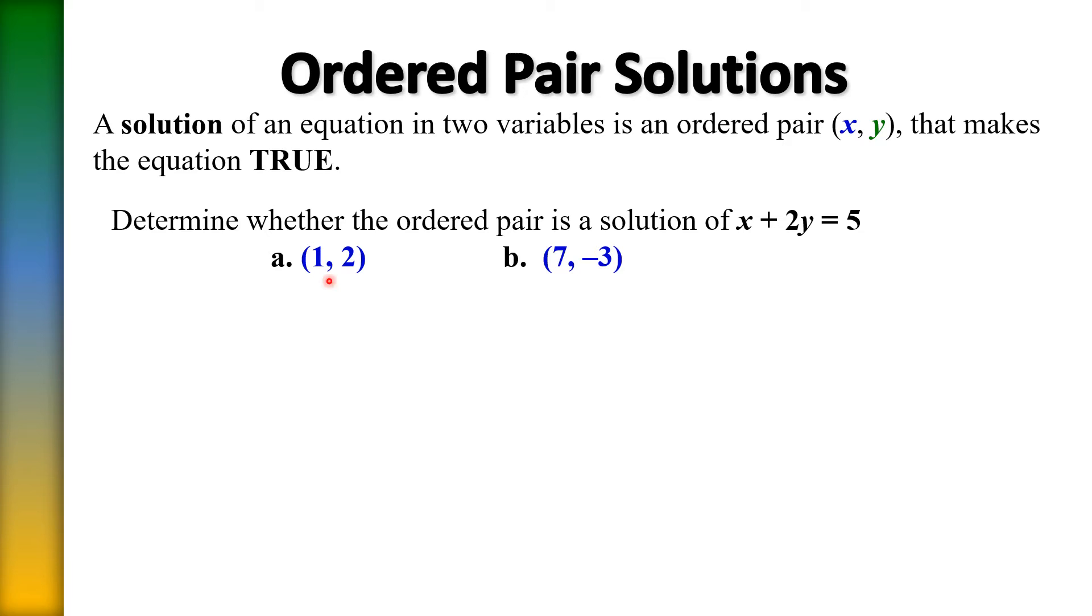So let's start with the first one, the ordered pair of one comma two. So into the given equation, we're going to remove the x and replace it with one, remove y, and replace with two.